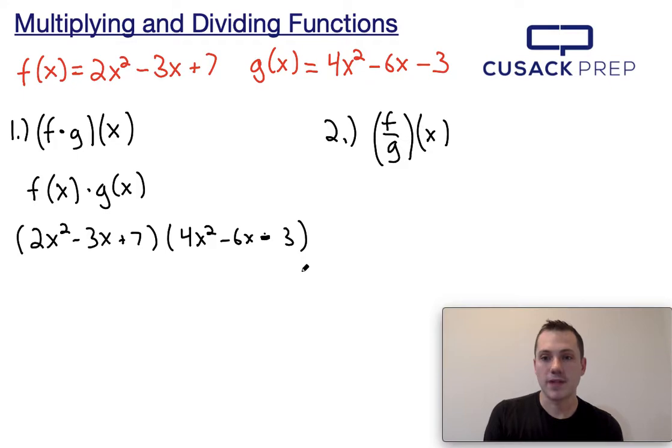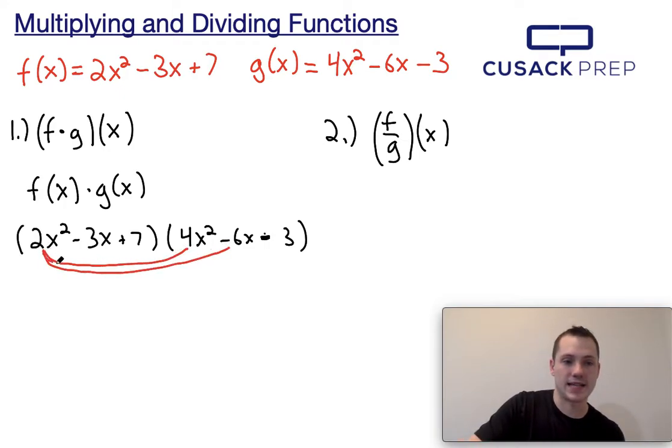Now when multiplying functions we have to FOIL, which means that we multiply every term within the first function by every term within the second function. So let's say I were to multiply this out. I would have to do 2x squared times 4x squared, 2x squared times negative 6x, and 2x squared times negative 3.